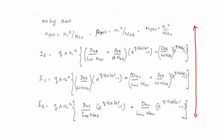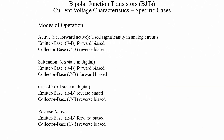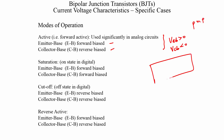Let us say we are interested in defining the IV characteristics in active mode operation. In active mode, you have the emitter-base junction forward biased and the collector-base junction reverse biased. We have been looking at a PNP device, so you have your P+ emitter, N base, and P collector.